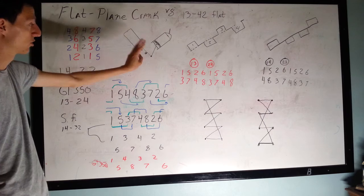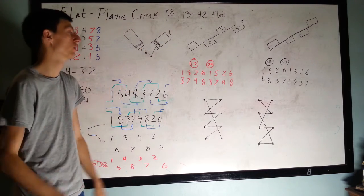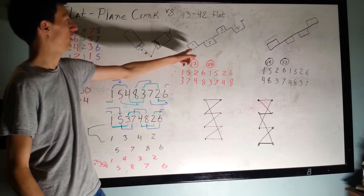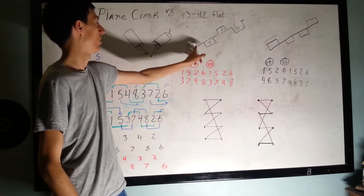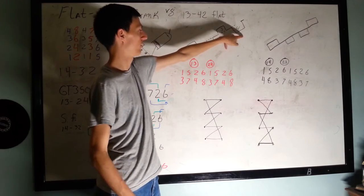And so there are two ways to make a balanced flat plane crank, and you end up with the one, three, two, four crank, which means one and three are uppers, two and four are downers.